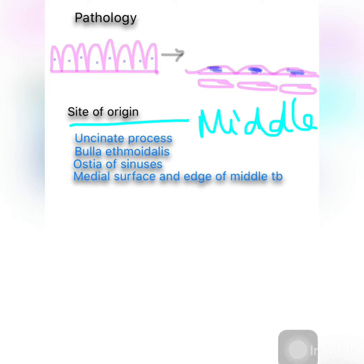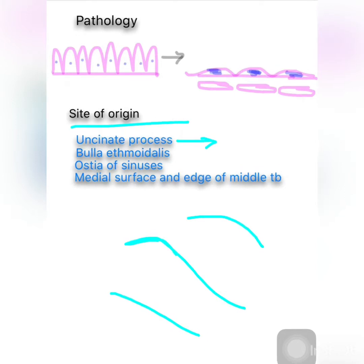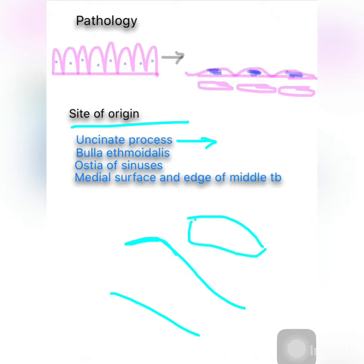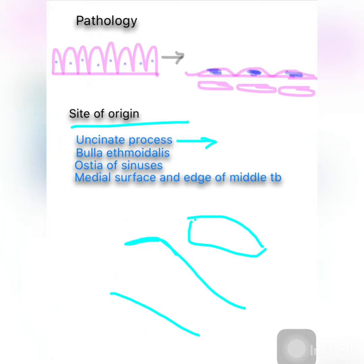Regarding site of origin: bilateral ethmoidal polyps usually arise from the lateral wall of the nose, specifically from the middle turbinate. The most common sites are the uncinate process, bulla ethmoidalis, ostia of sinuses, and the medial surface and edge of the middle turbinate. I am drawing the turbinates — these are the turbinates reflected to show the bulla ethmoidalis and ostia of sinuses, including the uncinate process.